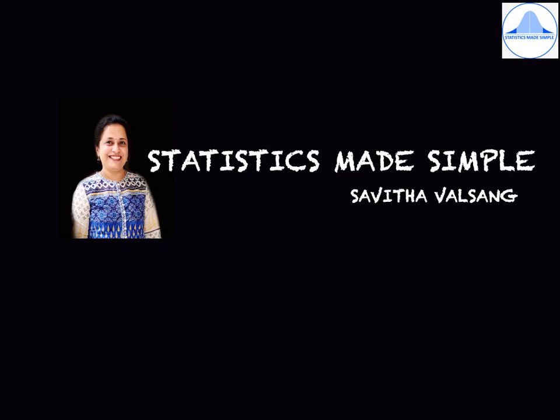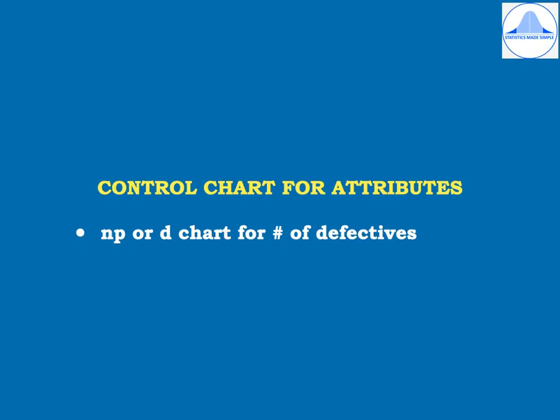You're watching Statistics Made Simple and I am Savita Valsang. In this video, I'll discuss the control chart for attributes and in particular the NP or D chart for number of defectives.